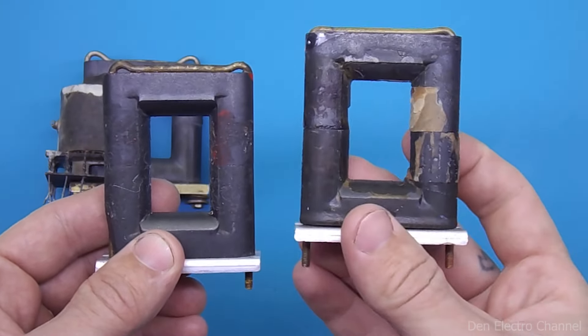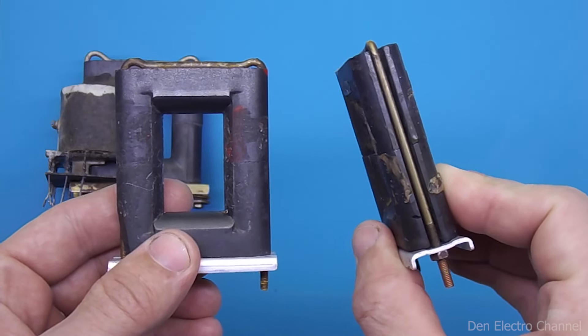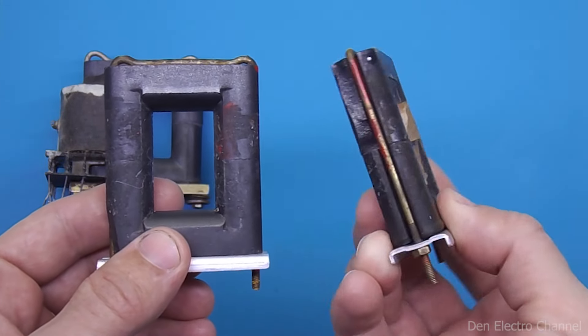In other cases, it turns out like this. The glue remains on the core and even with a knife it is very difficult to remove.